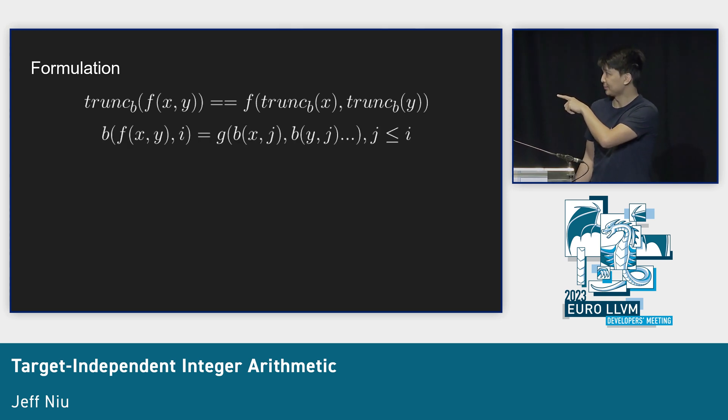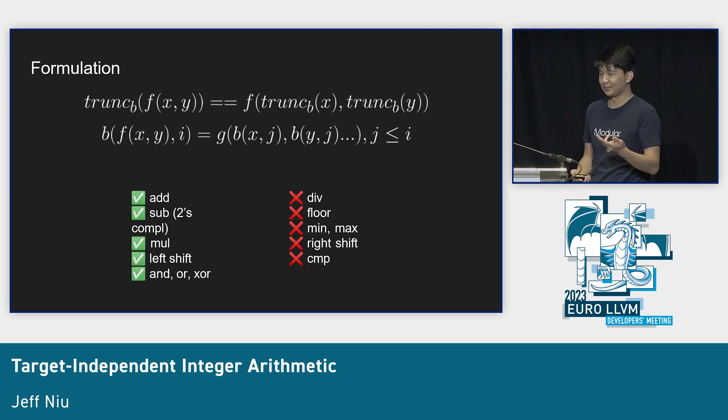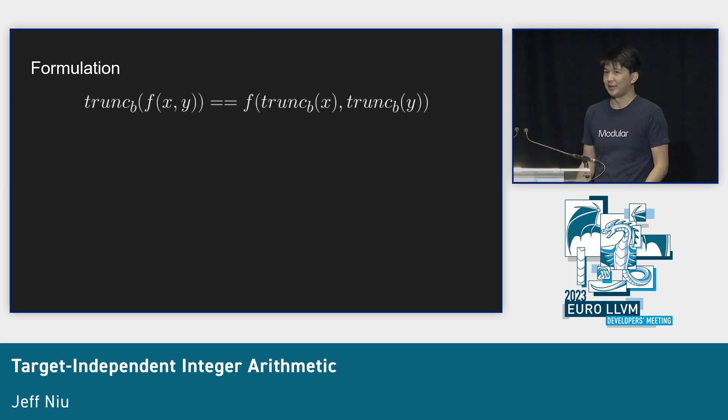This boils down to sign-insensitive operations where computation of a bit value at a particular point doesn't depend on higher bits. This works for add, subtract, bitwise complement, multiply, left shift. It doesn't work for sign-sensitive ones: division, floor, min, max, right shift, and comparison, because comparison is sign-sensitive.